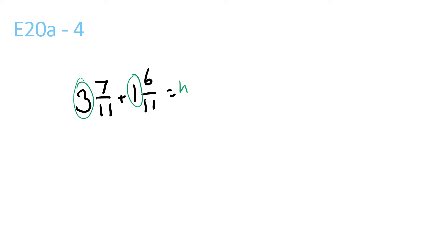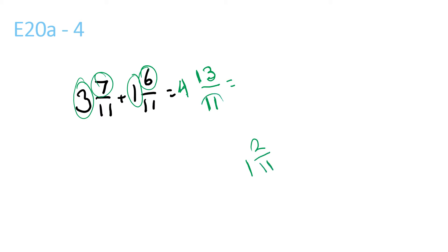3 plus 1 is 4. 7 plus 6 is 13, and the bottom stays the same. You can simplify it further because 13 is bigger than 11. 11 goes into 13 once with a remainder of 2 over 11. So 1 and 2 over 11 plus 4 is 5 and 2 over 11.